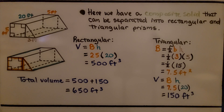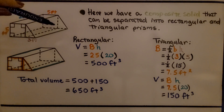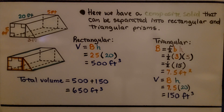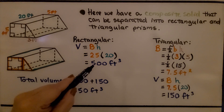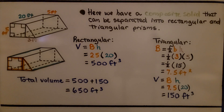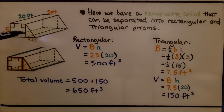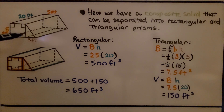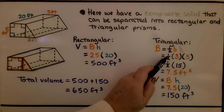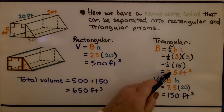Here we have a composite solid that can be separated into rectangular and triangular prisms. For the rectangular prism, volume equals base area times height. We have five times five, which is twenty-five, and the height is twenty. That gives us five hundred feet cubed. For the triangular prism, the base area equals half base times height — that's half of three times five, which is half times fifteen, or seven and five tenths feet squared.